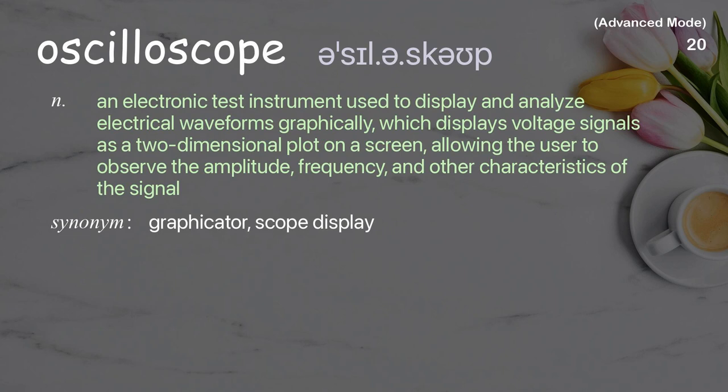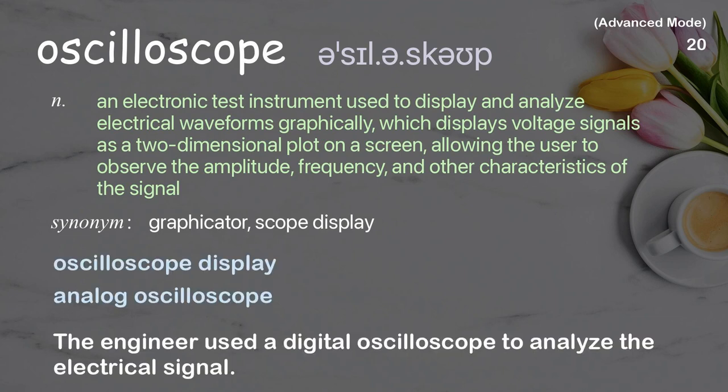Oscilloscope. An electronic test instrument used to display and analyze electrical waveforms graphically, which displays voltage signals as a two-dimensional plot on a screen, allowing the user to observe the amplitude, frequency, and other characteristics of the signal. Examples: oscilloscope display, analog oscilloscope. The engineer used a digital oscilloscope to analyze the electrical signal.